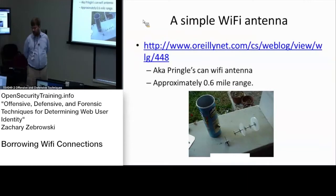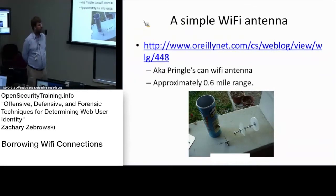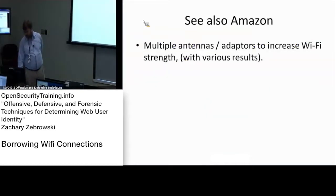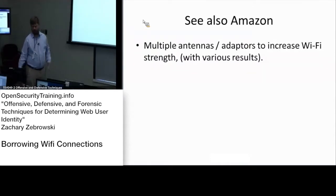A simple WiFi antenna increases your range from your house to about a little bit over half a mile. It's reasonably straightforward to build. It's called the Pringles antenna because it uses a Pringles can. Amazon also has multiple commercial antennas available instead of the Pringles antenna, which usually have some sort of pre-amp or post-amp associated with them.